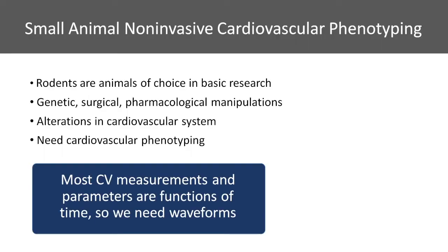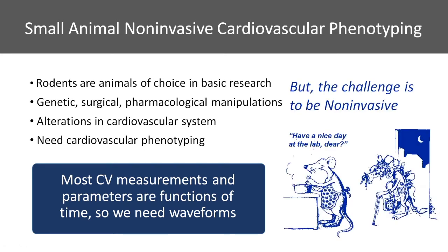Why is it needed? We all know that rodents are animals of choice in basic research. They undergo genetic, surgical, and pharmacological manipulations, and this results in changes to the cardiovascular system. So we need cardiovascular phenotyping. Since most cardiovascular measurements and parameters are functions of time, we need to get waveforms, and we need to get these waveforms non-invasively — I'll be emphasizing the invasive versus non-invasive nature quite a bit.